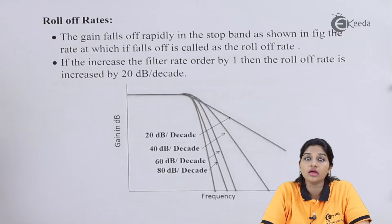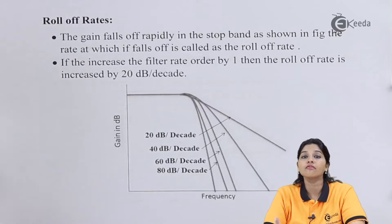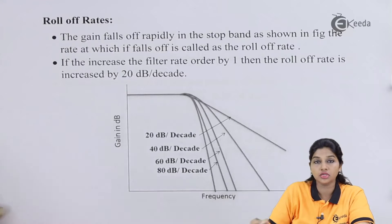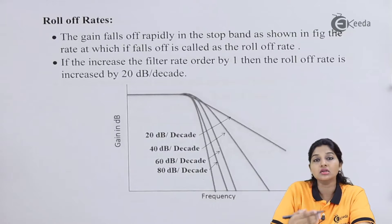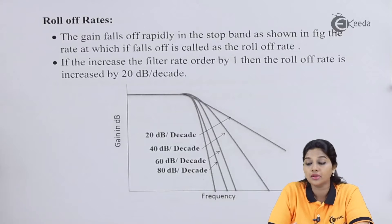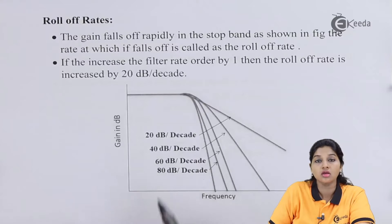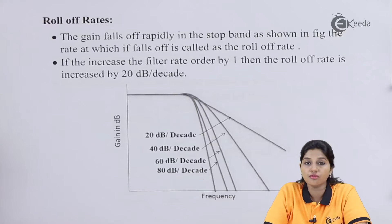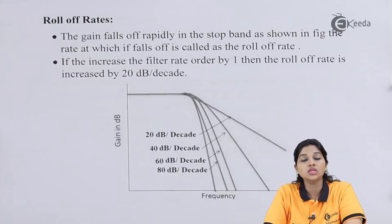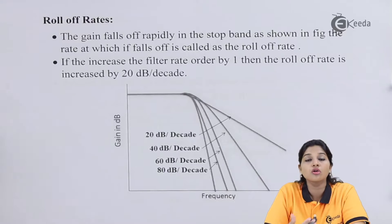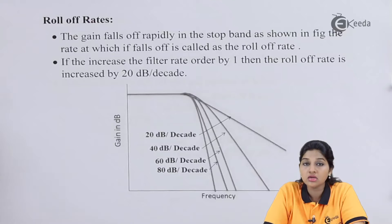If the order is 1, the roll-off rate is 20 dB per decade. If the order is 2, the roll-off rate increases by 20 dB per decade and becomes 40 dB per decade. Similarly, for order 3 and 4, the roll-off rate is 60 and 80 dB per decade respectively. Increasing the order provides a sharper frequency response but also increases complexity.